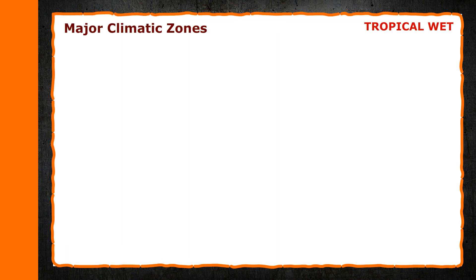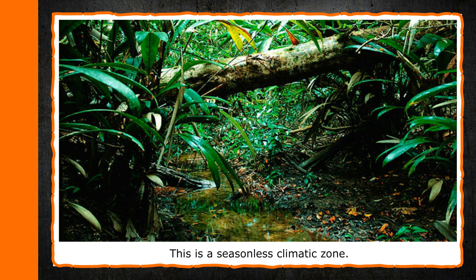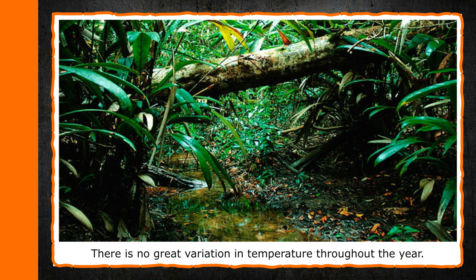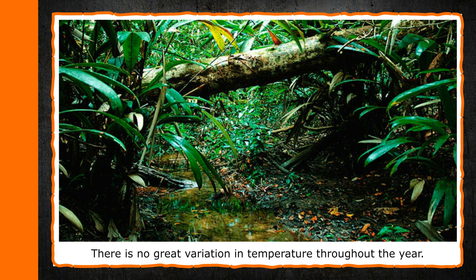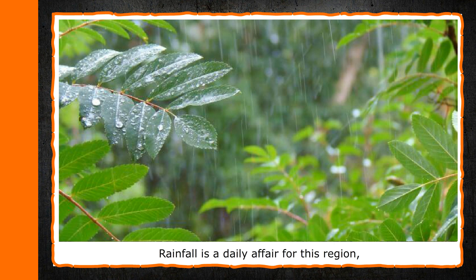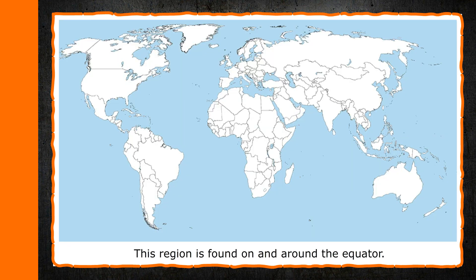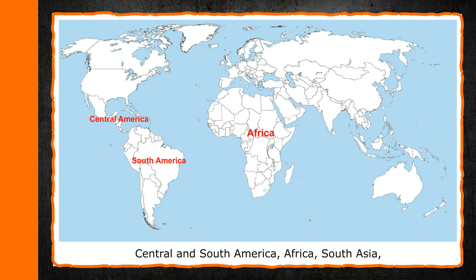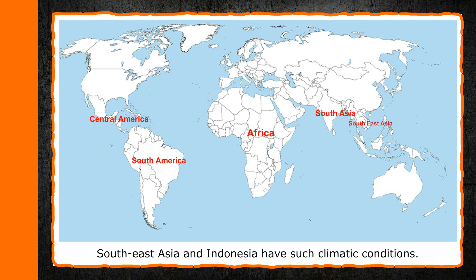Tropical Wet. This is a seasonless climatic zone. There is no great variation in temperature throughout the year. This region remains very hot and humid. Rainfall is a daily affair and it receives about 80 inches of average annual rainfall. This region is found on and around the equator. Central and South America, Africa, South Asia, Southeast Asia and Indonesia have such climatic conditions.